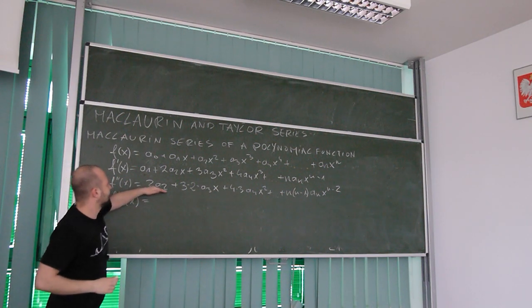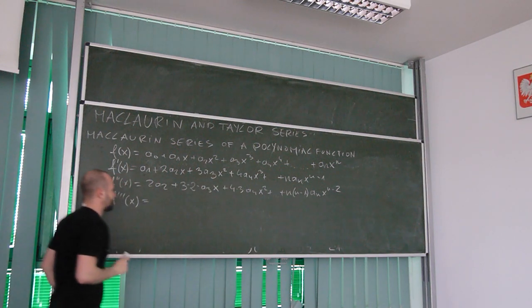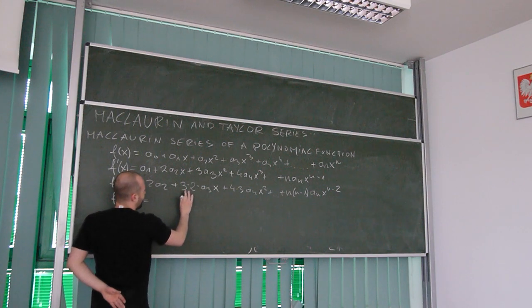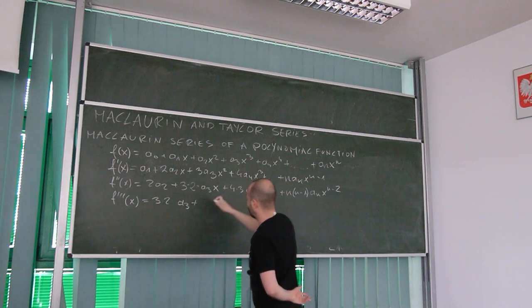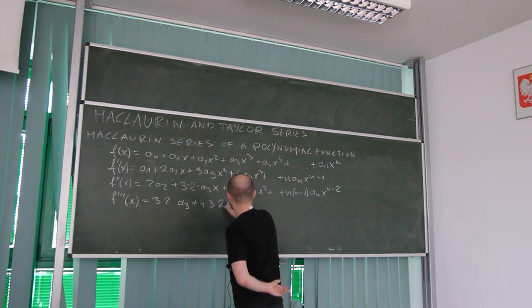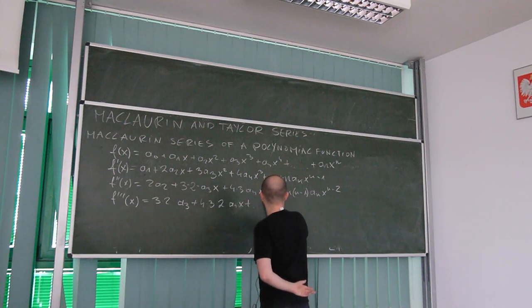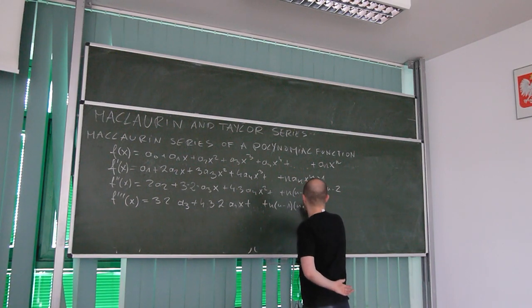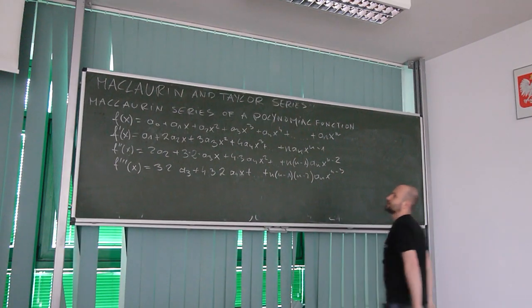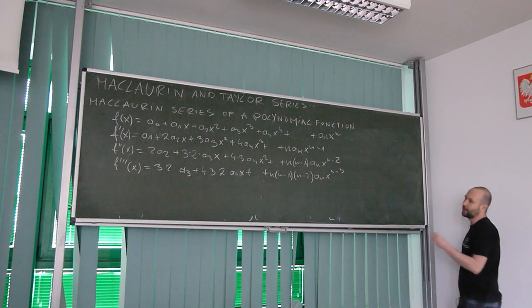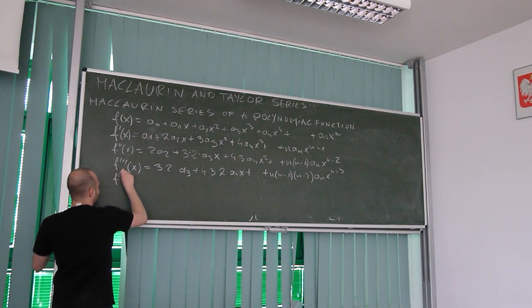Now let's calculate the third derivative. The constant is gone, and we get 3·2·a₃ plus 4·3·2·a₄x plus ... going on until n(n-1)(n-2)aₙxⁿ⁻³. I hope you're starting to see where this is going, but let's go a little bit further.